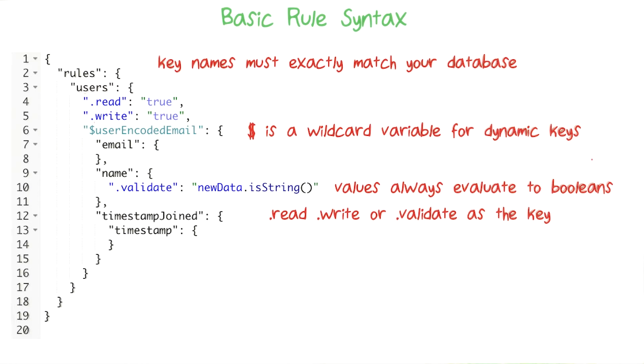And the value of a rule will always be something that evaluates to a Boolean. And this is important, because when a user tries to read or write at that location, the value of this Boolean affects whether they're actually able to do so.